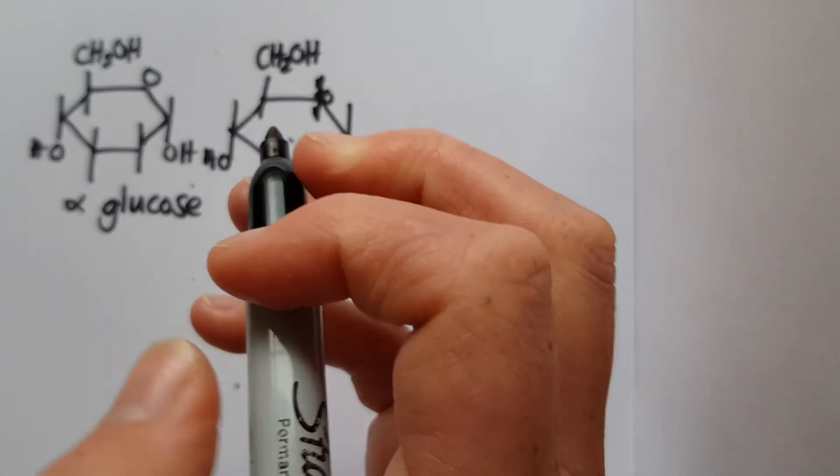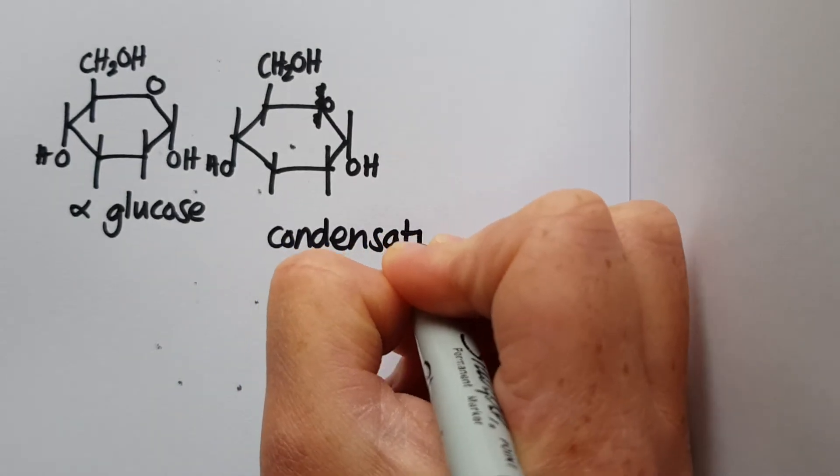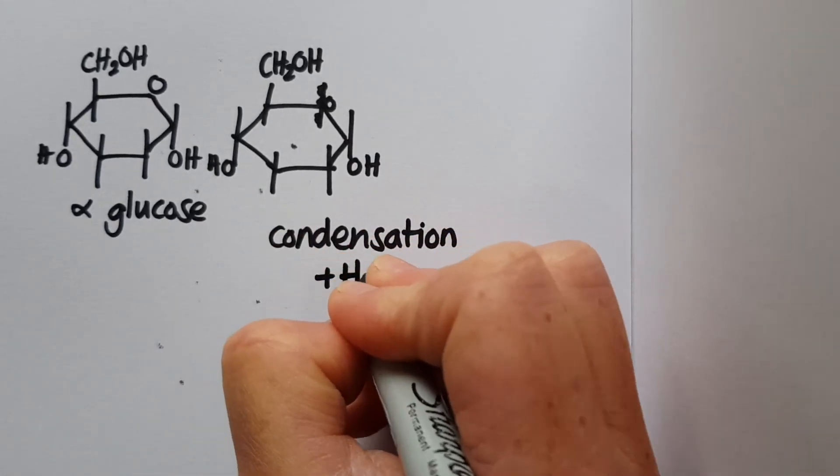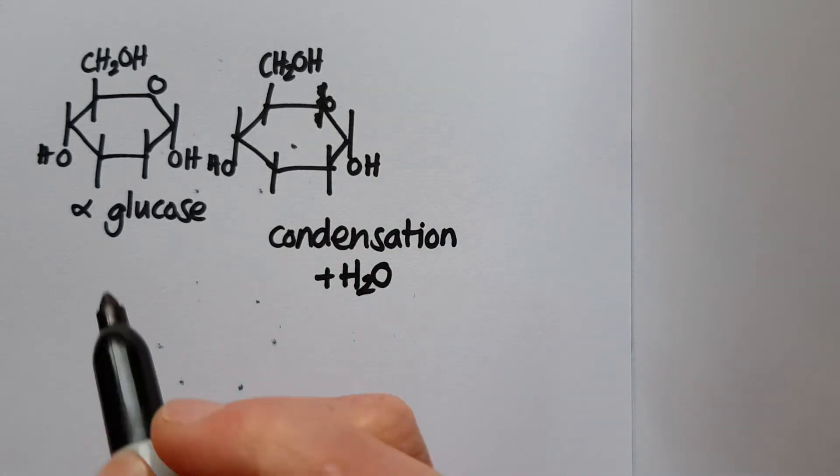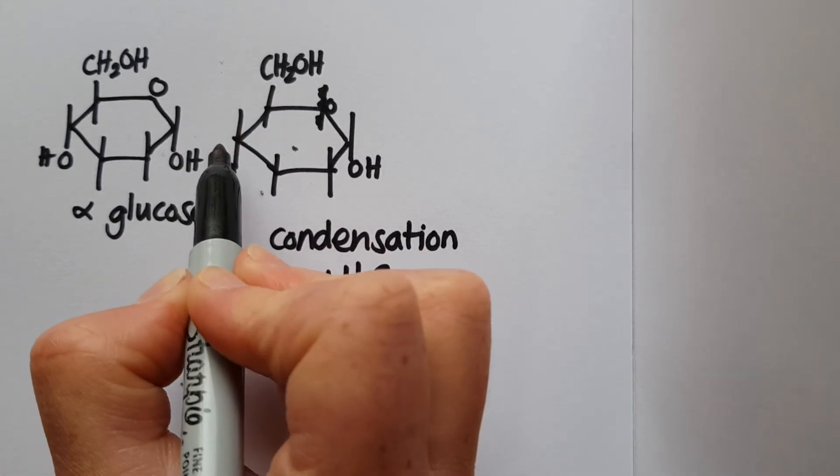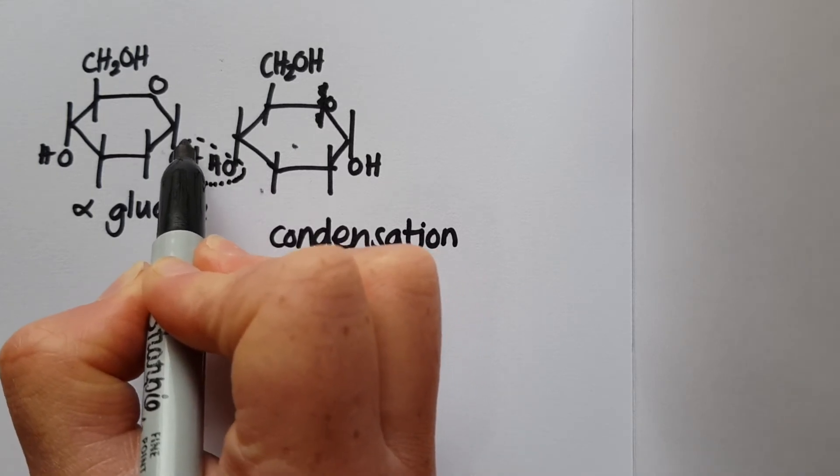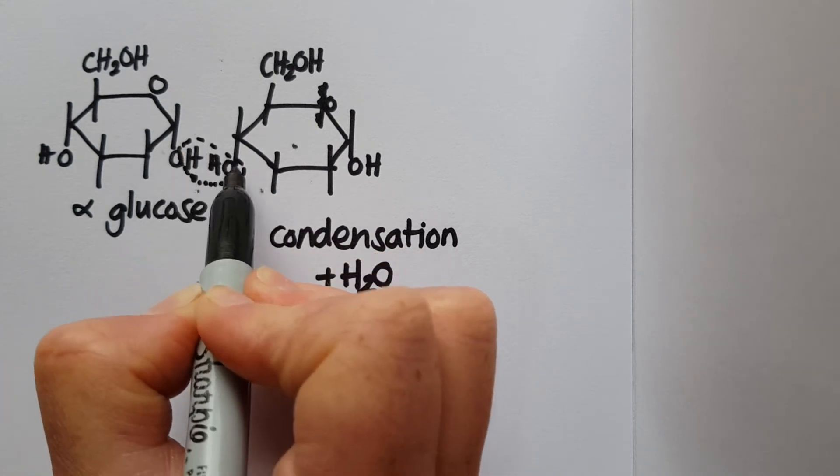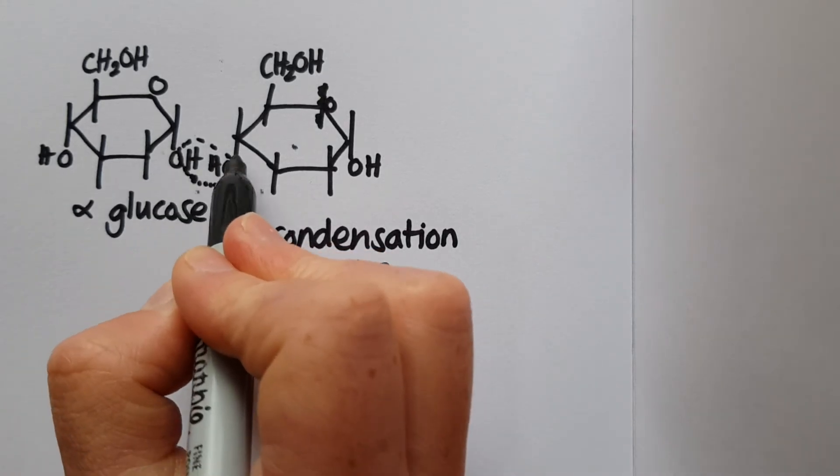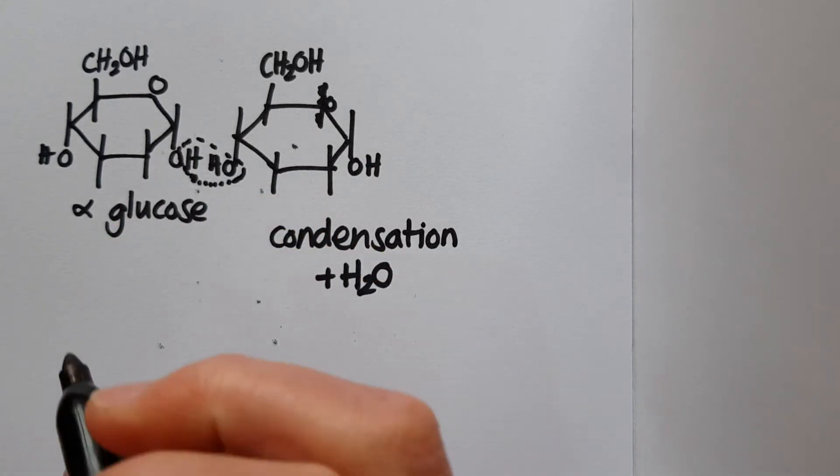When two biological molecules join together in this way, it's called a condensation reaction. As the name suggests, we're going to produce a molecule of water, and that water comes from these molecules that are currently part of the alpha glucose. You can see we've got two hydrogens and an oxygen, and they're going to combine together to form water. When that water is released, we're left with a bond joining these two molecules of alpha glucose together.